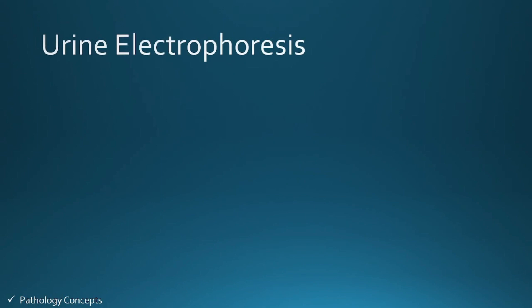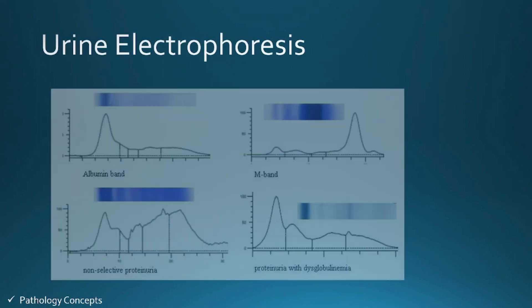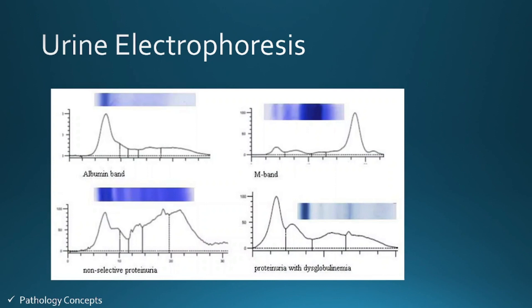Urine capillary electrophoresis is useful for the primary diagnosis of various proteinurias including Bence Jones protein in the urine. It shows an M band on electrophoresis. After that, immunofixation electrophoresis follows with antisera to IgG, IgA, IgM, total kappa, and total lambda, which confirms the exact immunoglobulin and the free light chain in the Bence Jones protein.